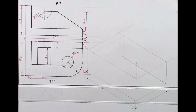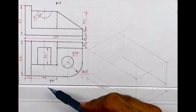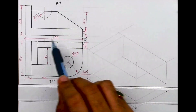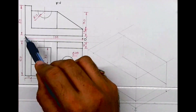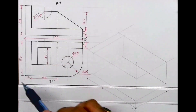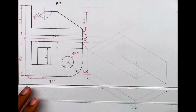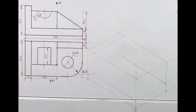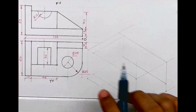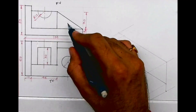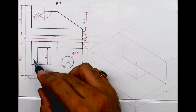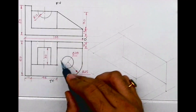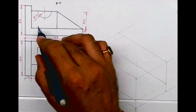Welcome to technical drawing. Today we'll see this in isometric. We have front view and top view. On the left side: 100 height, 50 width, 60 depth. We'll draw the layout like that. In the front view there are three parts, and in the top view there are more than three parts, so we'll start with the front view.